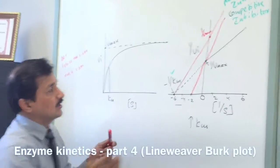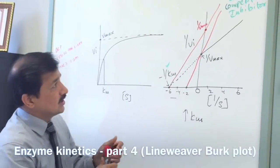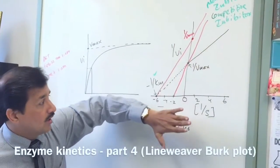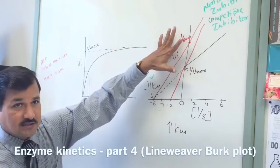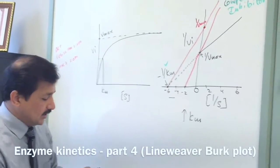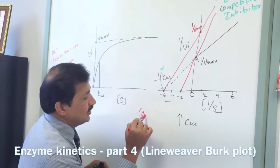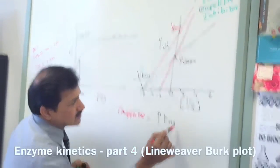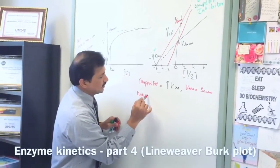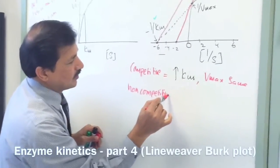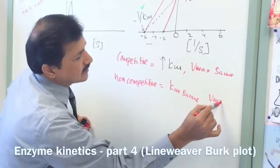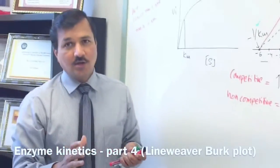In the presence of non-competitive inhibitor, maximum velocity of the reaction is decreased. Because 1 over Vmax is going away from 0 — anything going away from 0 in a reciprocal means the value is decreased. So non-competitive inhibitor decreases maximum velocity but Km remains same. To summarize: competitive inhibitor increases Km while Vmax stays the same, whereas non-competitive inhibitor keeps Km the same but decreases Vmax.